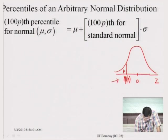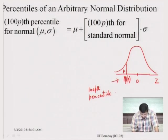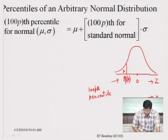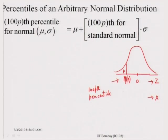So the 100p-th percentile on the standard normal is your eta_p. When you have the variable X, the 100p-th percentile is nothing but mu plus eta_p times sigma.